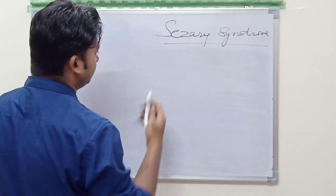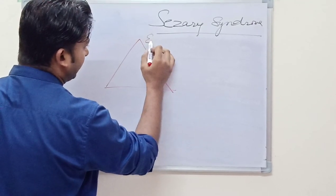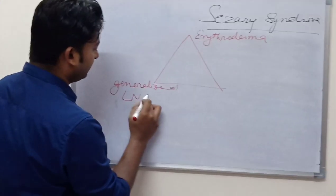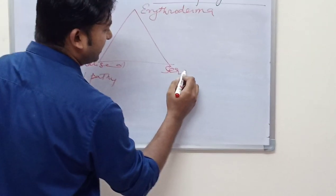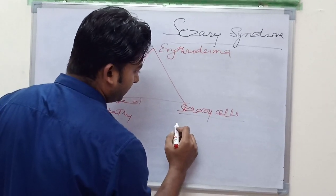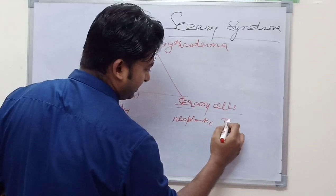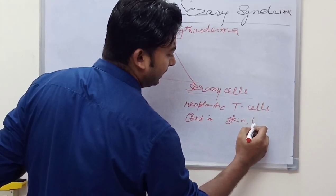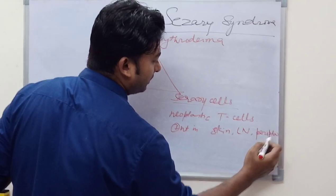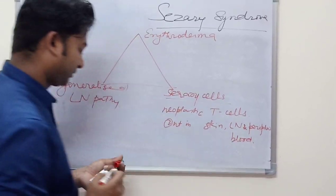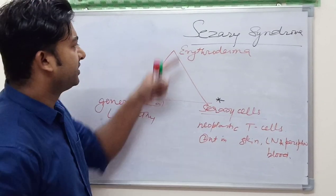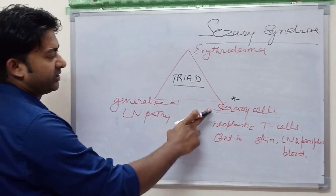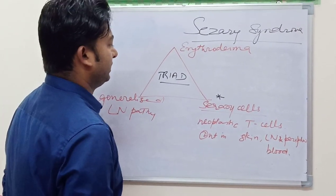So it is characterized by triad: erythroderma, generalized lymphadenopathy, and Sezary cells are seen. These are atypical or neoplastic T cells presenting in skin, lymph nodes, and peripheral blood. Sezary syndrome has got three triads. The triad is erythroderma, generalized lymphadenopathy, and Sezary cells we are going to see in the skin, lymph node and peripheral blood. This is called convoluted nuclei.